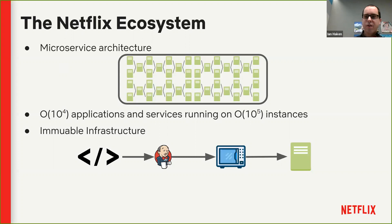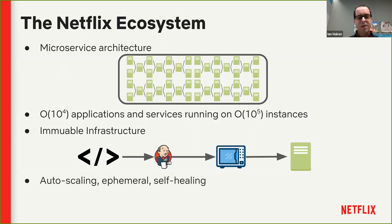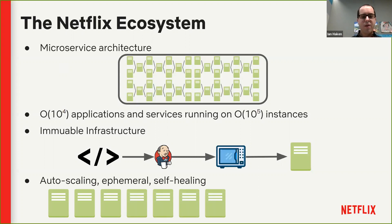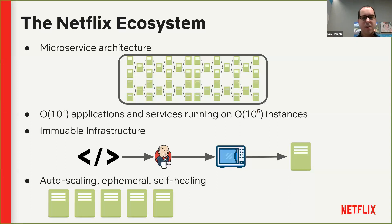That's an important feature of our architecture because it enables a lot of properties. Our ecosystem is auto-scaling — in the middle of the night when everyone's asleep, we might only be running a few instances, but as everyone gets home from work and turns on Netflix, we automatically scale up to handle that load. Everything in our ecosystem is really ephemeral. Instances show up and disappear on their own, and the way we engineer everything has to respect that.